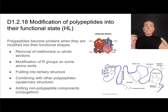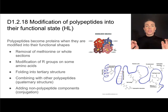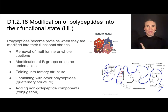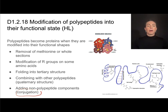So far in this video we've talked about more details in transcription and translation, and now we'll look at what happens to polypeptides after they've been translated. A polypeptide becomes a protein when it is modified and folded into its final functional shape. This can include the removal of methionine or even whole sections of amino acids, modification of R-groups on amino acids, folding into tertiary structure, or creating quaternary structure by combining with other polypeptides — as we see in hemoglobin, which has four polypeptides combined.